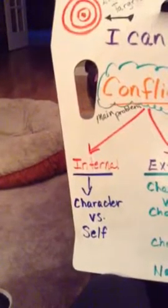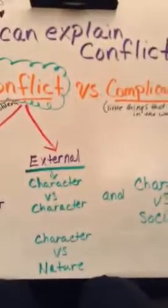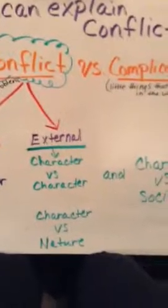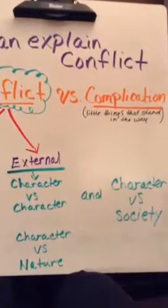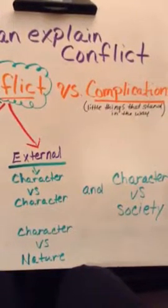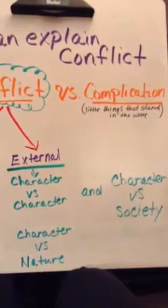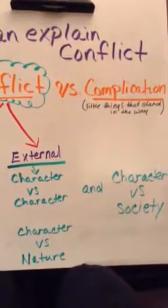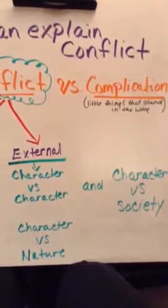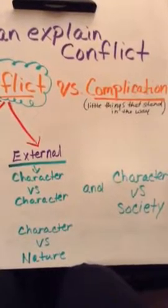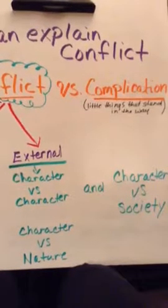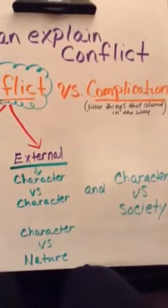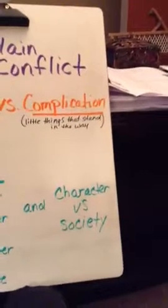That's an internal struggle that a character sometimes has. Now let's move on to external conflicts. When we look at external conflicts, there are actually three different choices. You can break it down further as you move beyond fifth grade — character versus machine, character versus technology, and so on. But for our practical purposes in fifth grade, we're going to talk about character versus character, character versus nature, and character versus society.